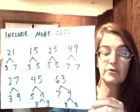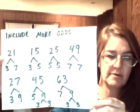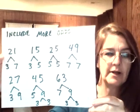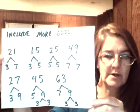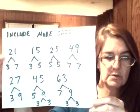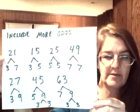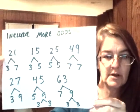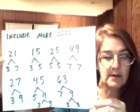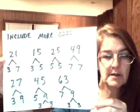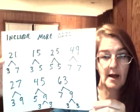Additional examples would include 25, which is 5 and 5; 49, which is 7 and 7; 27, which is 3 and 9; 45, which is 3, 5, and 9; and 63, which is 7, 3, and 9.